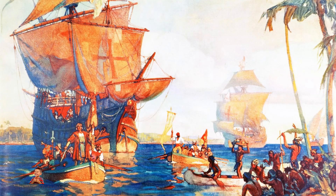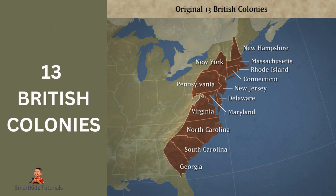Slavery was widespread in the American colonies, particularly in the southern regions where large-scale agriculture, such as tobacco, rice, and later cotton, relied heavily on slave labor. Slavery played a crucial role in the economic development of the colonies and later the United States. Why did the colonies fight against British rule?